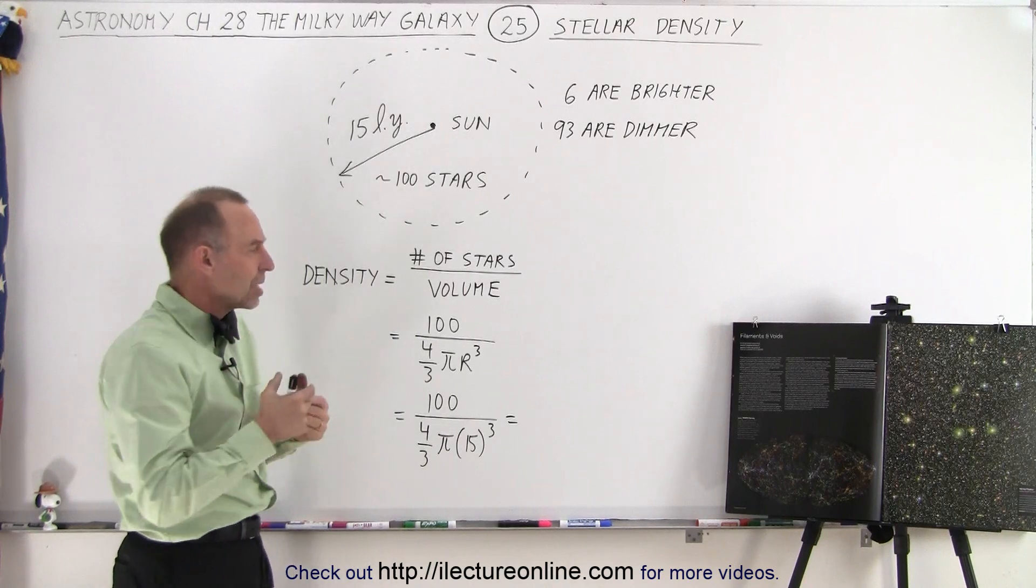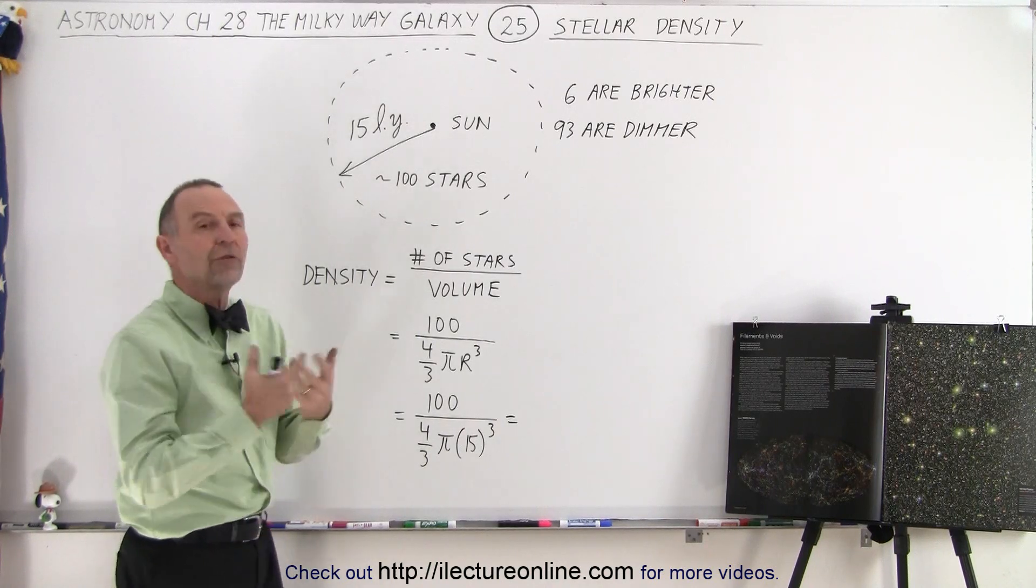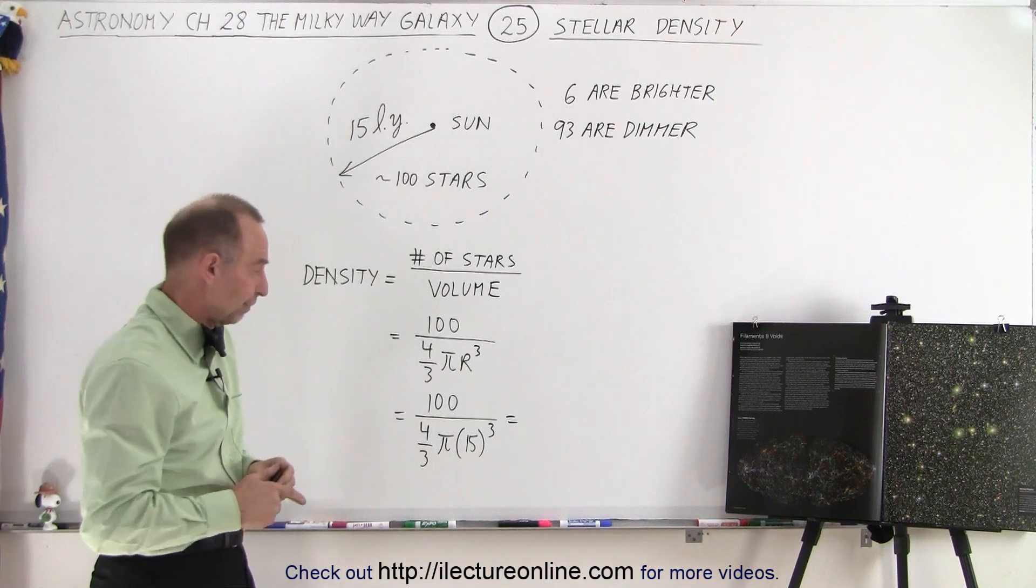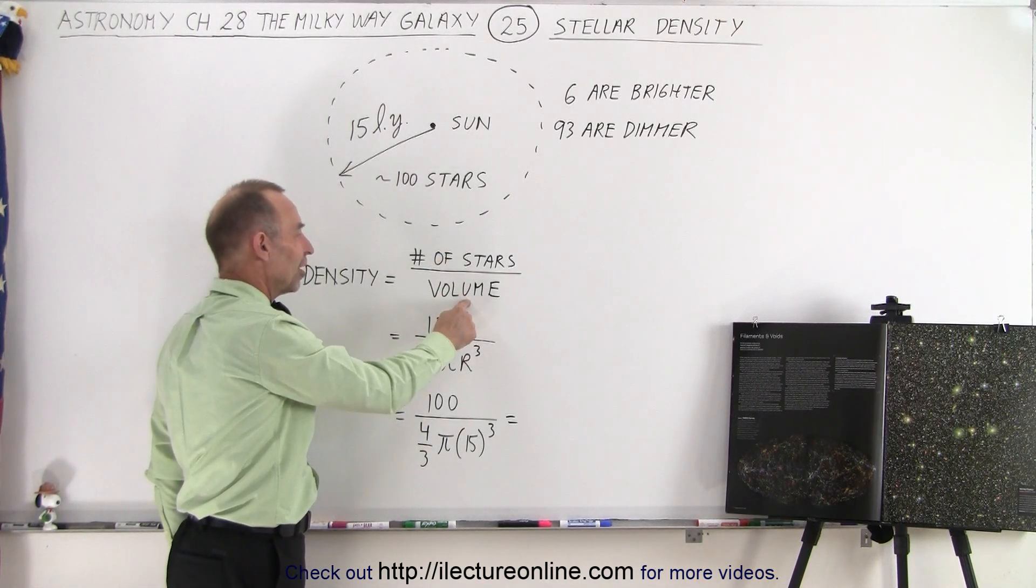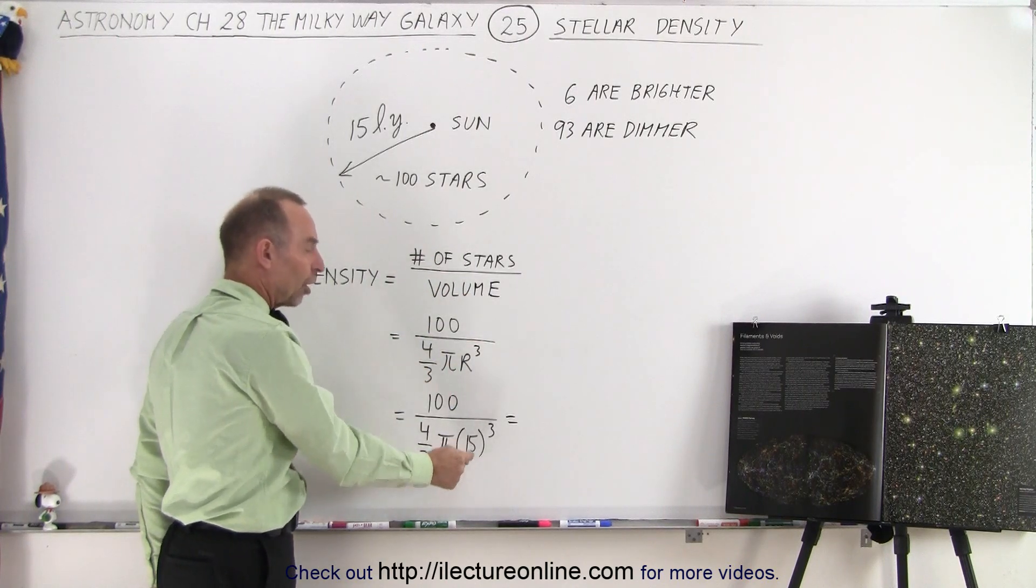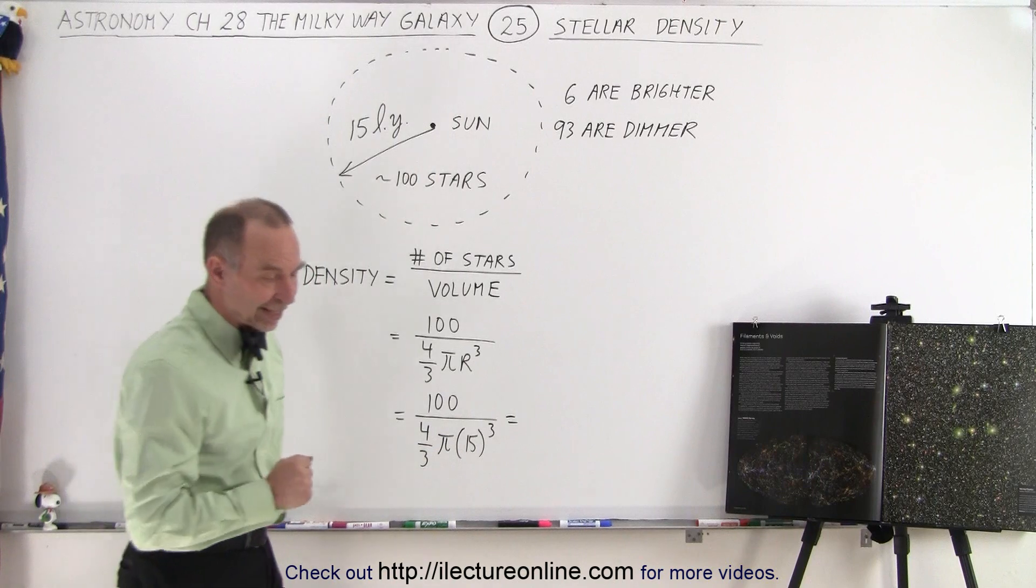So let's calculate the number of stars per unit volume, so to speak, and let's let the unit volume be a cubic light year. So we take the number of stars, divide by the volume of the sphere, which is four thirds pi r cubed, and of course the r would be then 15 light years.